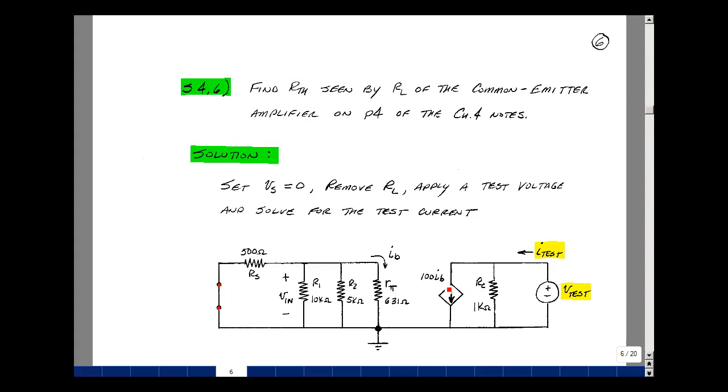Because we have a controlled source now, we can't just do series and parallel combinations. The controlled source is not a resistor. It's a relationship between voltages and currents, or in this case, current and current. So we'll apply a test voltage, measure a test current. The ratio of these two would be the resistance seen looking back.